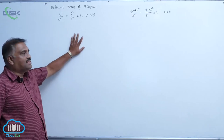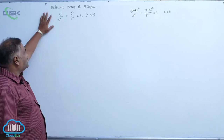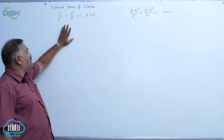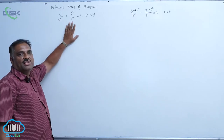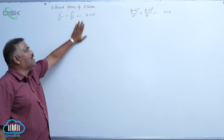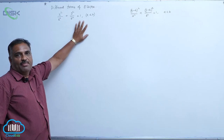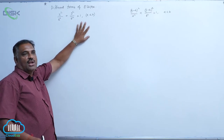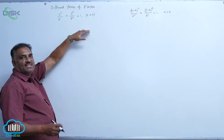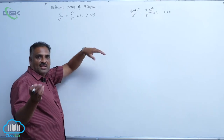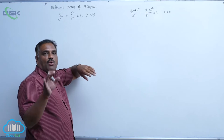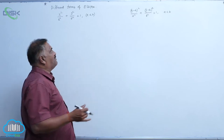We will discuss another case: x²/a² + y²/b² = 1, where a < b. Previously it is a horizontal ellipse, now it is a vertical ellipse.